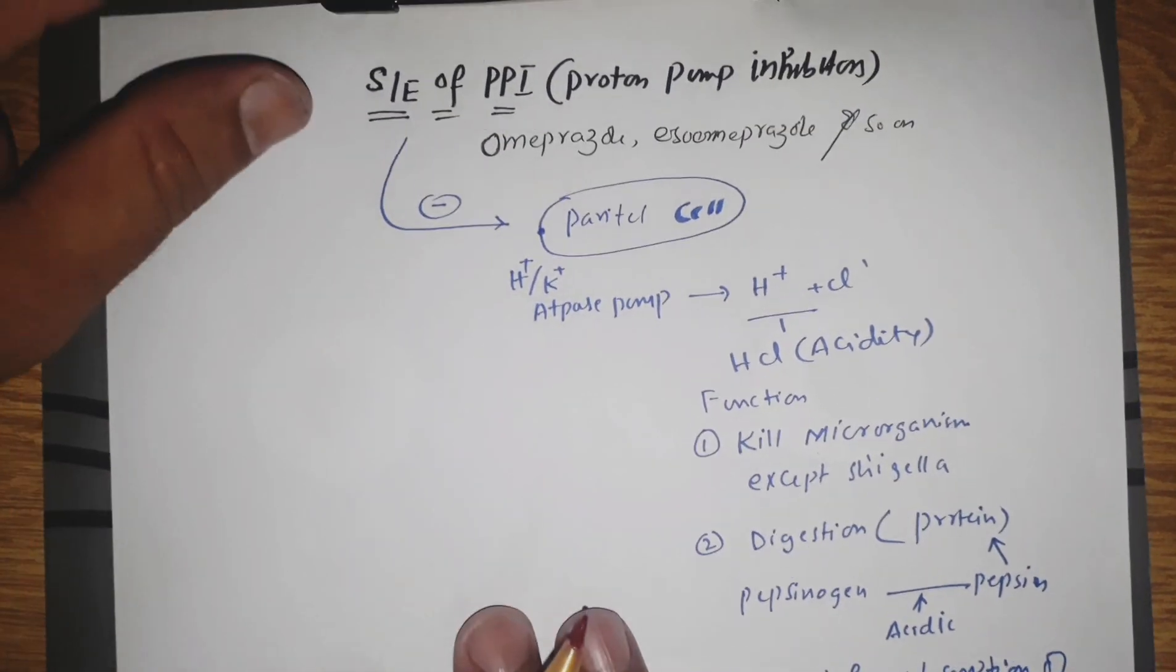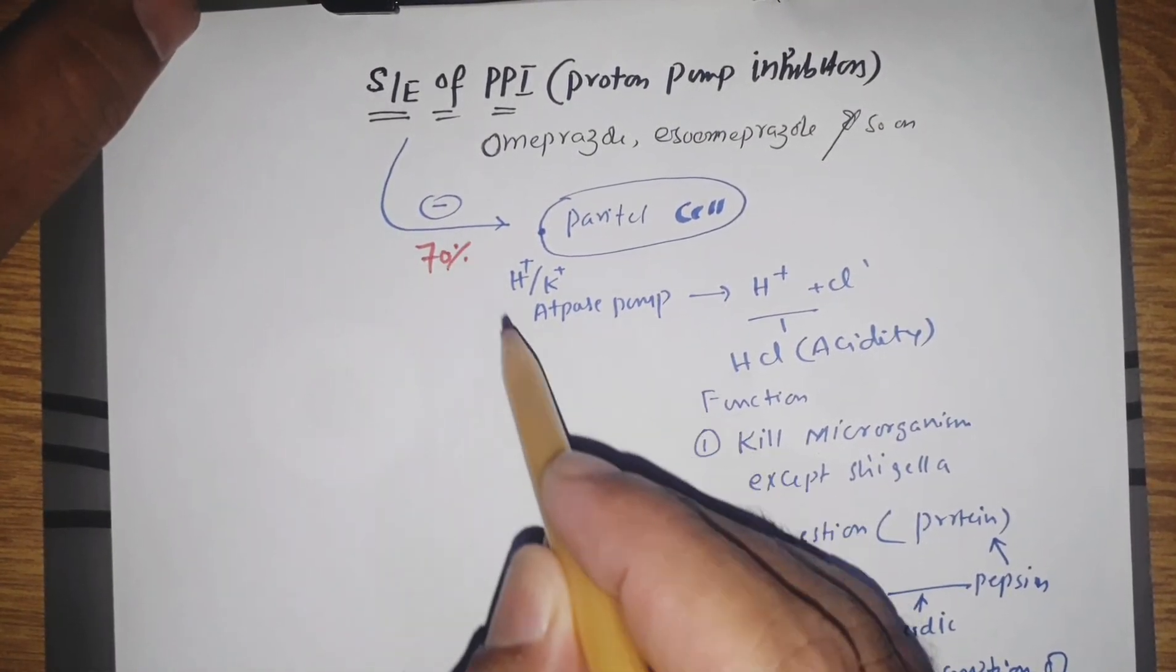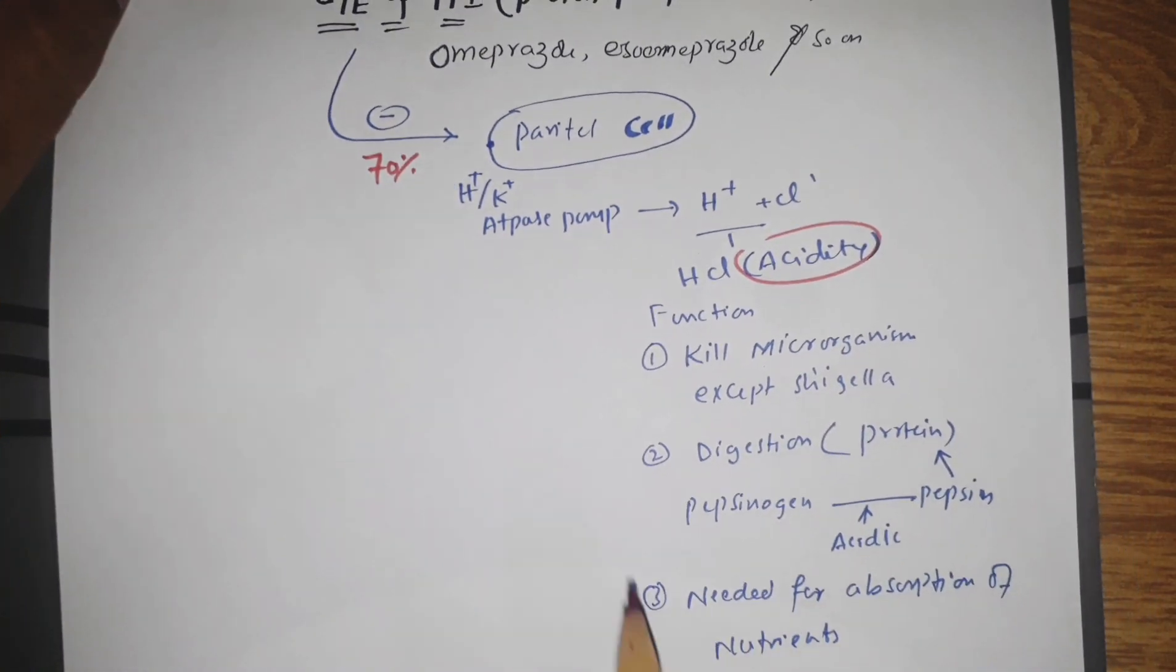Now let's talk about the side effects of PPIs. PPIs block 70% of acidity in the stomach.